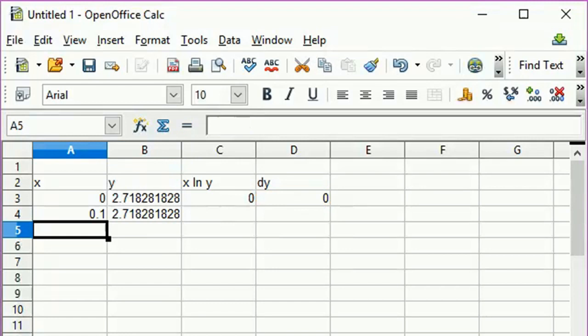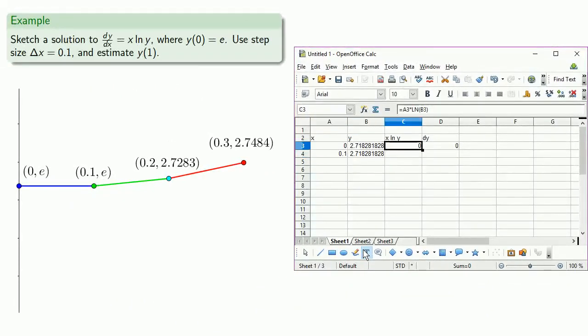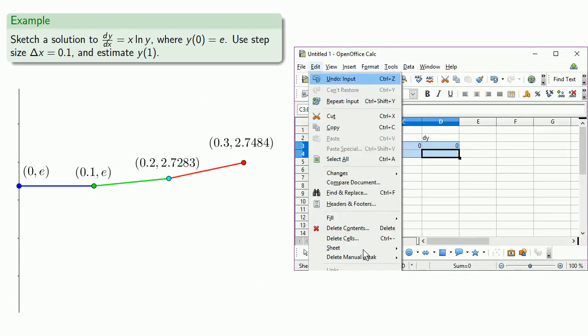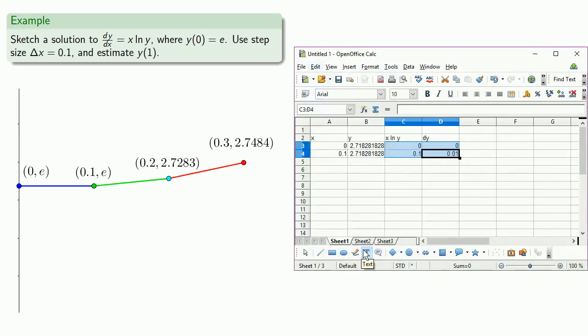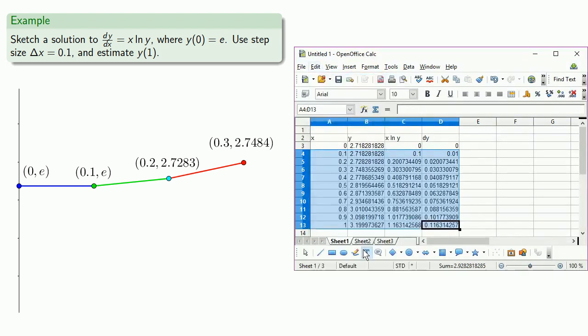We'll compute our new derivative and new delta y value for the current point. And in the spreadsheet we can just fill down the formulas. And then we'll fill down all the formulas. And we can read off the value at x equal to 1.